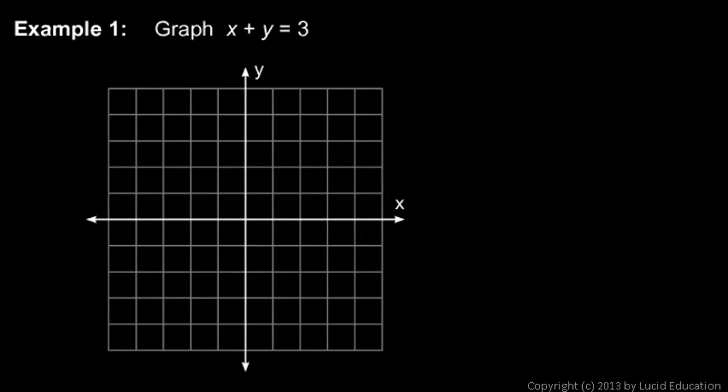To do this, we find some ordered pairs that are solutions to this equation, and then we plot those points on the x-y plane. And this equation is really simple. We can find some ordered pairs mentally without a whole lot of effort.